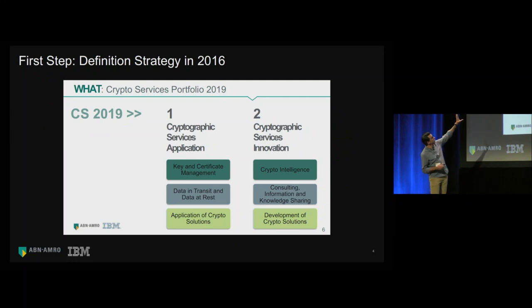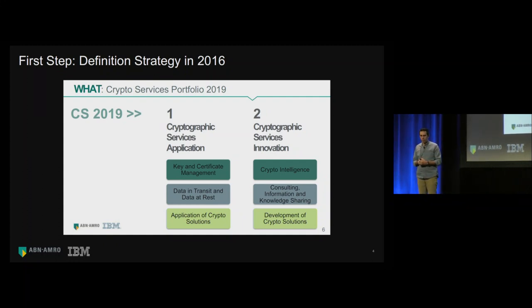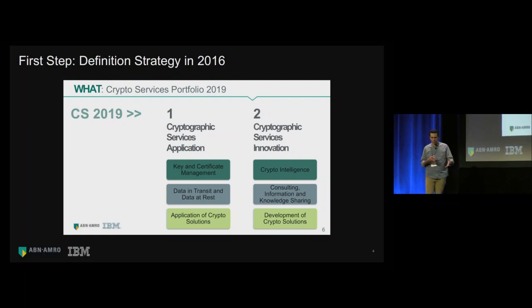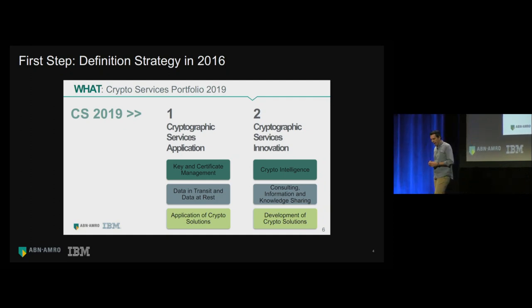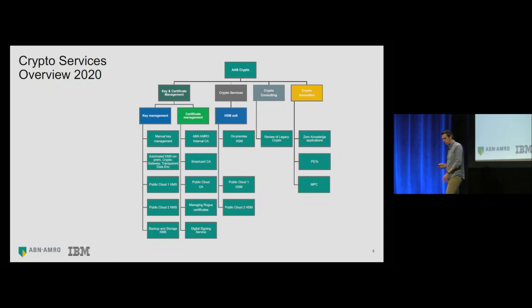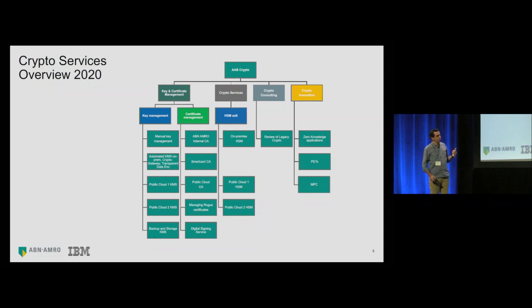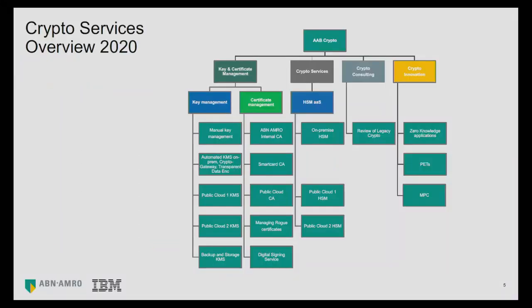The high-level crypto strategy from 2016 distinguished between central crypto services delivered to the whole bank and capabilities implemented within the bank. Nowadays they have a much more comprehensive set of both central crypto services and capabilities. Rather than listing everything they're currently doing, they want to share four stories — lessons learned as they implemented this crypto strategy.